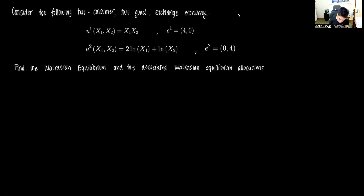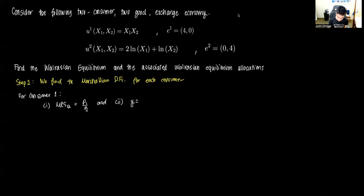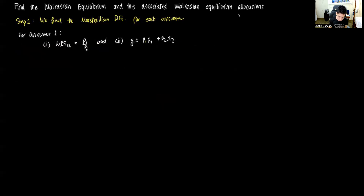We want to find the associated Walrasian equilibrium allocations in this economy. Step one is to find the Marshallian demand functions for each consumer. For consumer one, we have two first-order conditions to follow: one is that MRS₁₂ equals the price ratio, and two is that income y equals P1·x1 plus P2·x2. We start with the MRS.